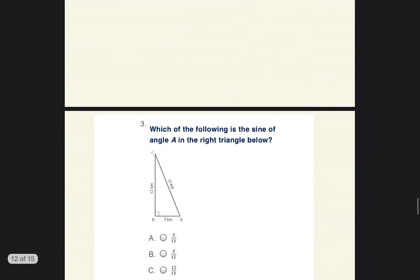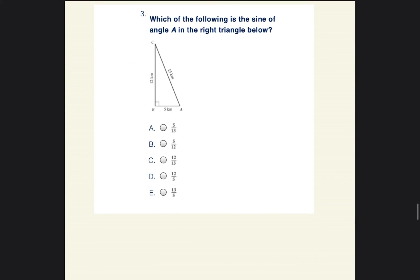All right, so let's go ahead and go to question number three. So question number three says which of the following is the sign of angle A in the right triangle below? So this is a right triangle because there's a 90 degree angle. It's good to just know that information, even though this question is not asking that. But just so you know, right triangles have a right angle.